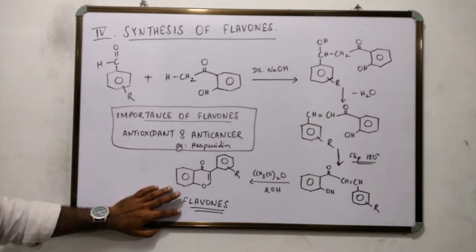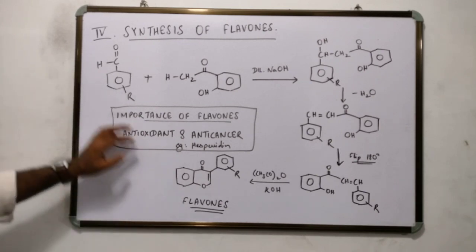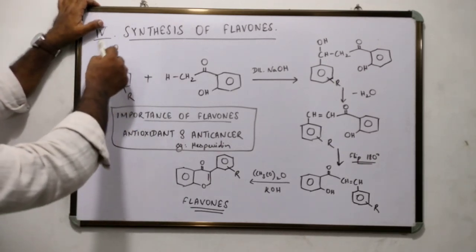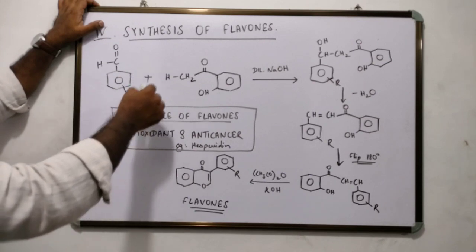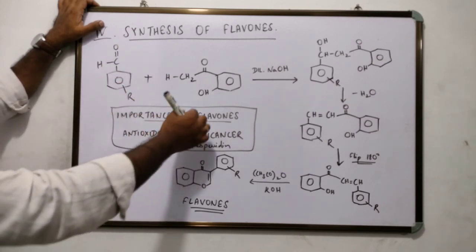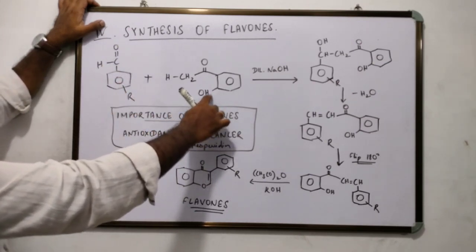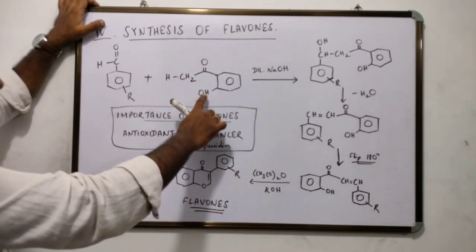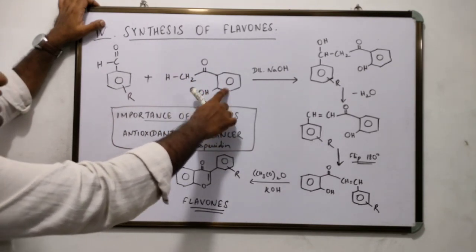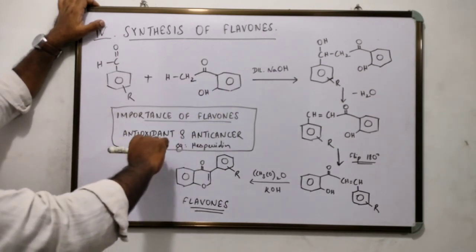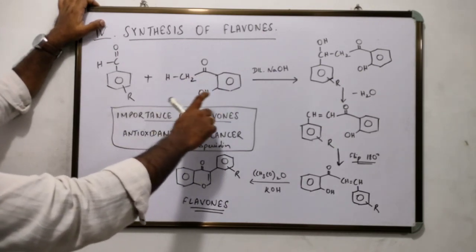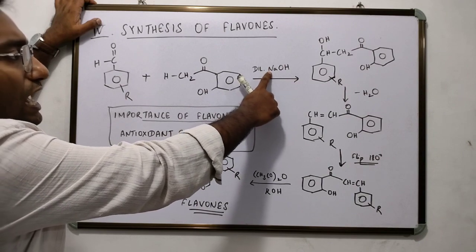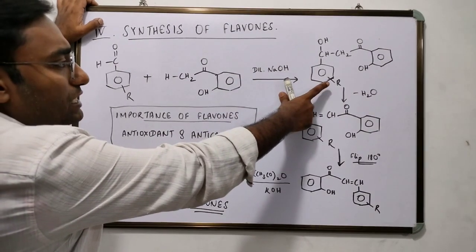So how do we prepare flavones? We prepare them by Klaisén-Schmidt condensation. In this reaction we use a substituted benzaldehyde and an orthohydroxyacetophenone, which is nothing but a substituted aryl methyl ketone. We treat them both in the presence of dilute NaOH and what we get is a mixed ketone.